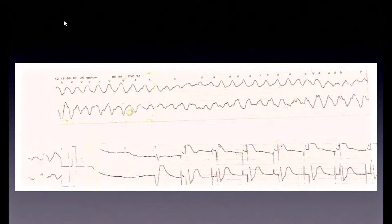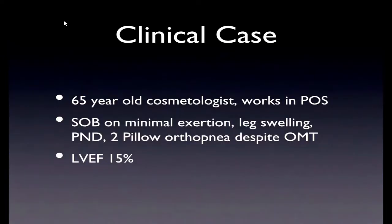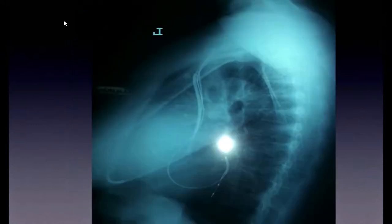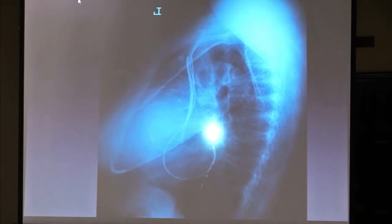Here is a case: a 65-year-old cosmetologist from Grenada working in Port of Spain, with minimal exertion shortness of breath, leg swelling — the full picture of heart failure — with an ejection fraction of 15 percent. After implantation of cardiac resynchronization therapy with defibrillation, the X-ray shows three leads: one in the right ventricle, one through the coronary sinus, and one in the right atrium. The right ventricular lead is thicker — that's the shock coil, the high-voltage equipment.